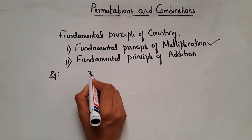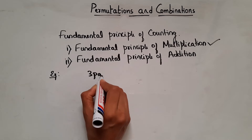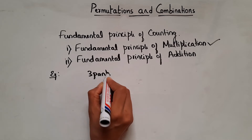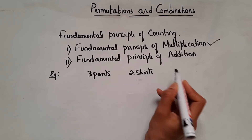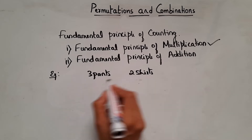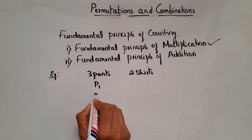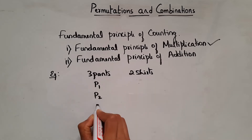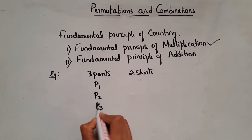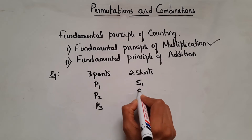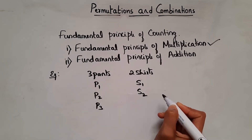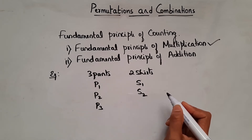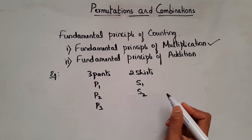Let's say Mohan has three pants and two shirts. Let me take those pants as P1, P2, P3 and shirts as S1 and S2. So now can you tell me how many different pairs of pants and shirts can he dress up with?